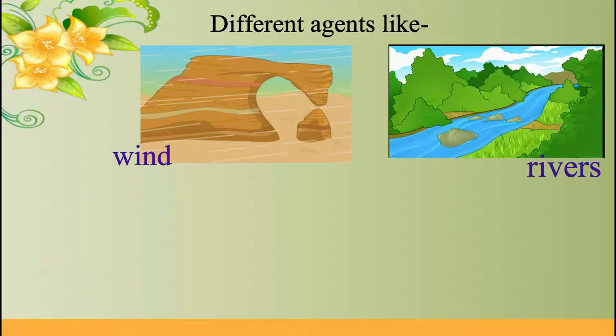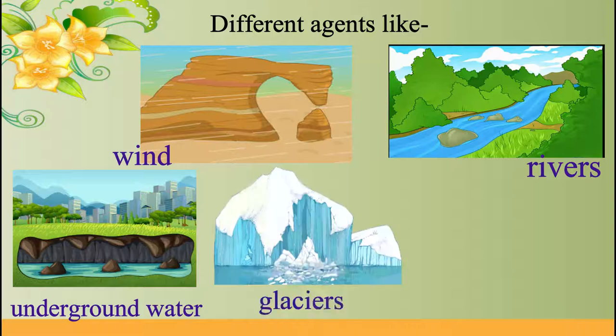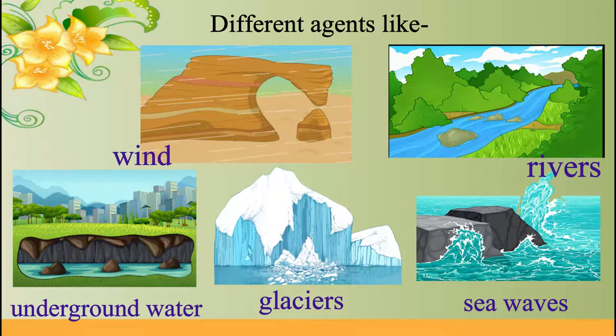rivers, underground water, glaciers, sea waves, etc. erode rocks to form various landforms.